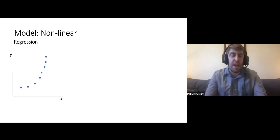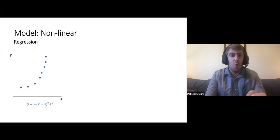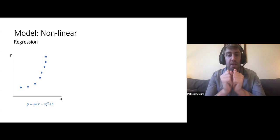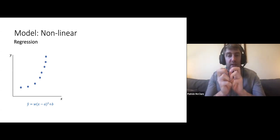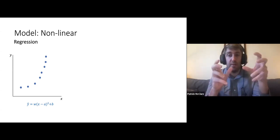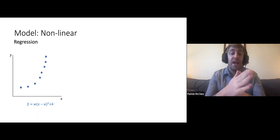For example, let's look at our regression example. What we could do is apply a parabolic transformation of X — we take X, subtract a value, and square it. Then we can use the output of this as the input to a linear model: we take the output, multiply it by a weight, and add a bias.